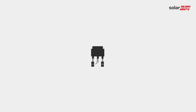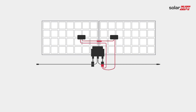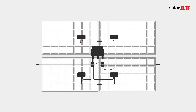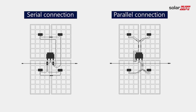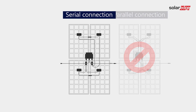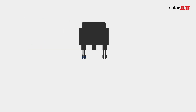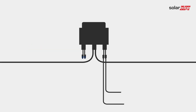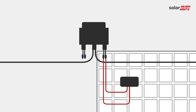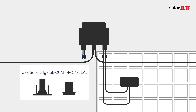The M1600 only supports serial connections of two 72-cell modules to each input. Parallel connections are not supported. Ensure that one module is always connected to the primary input at all times and do not leave any input unprotected.